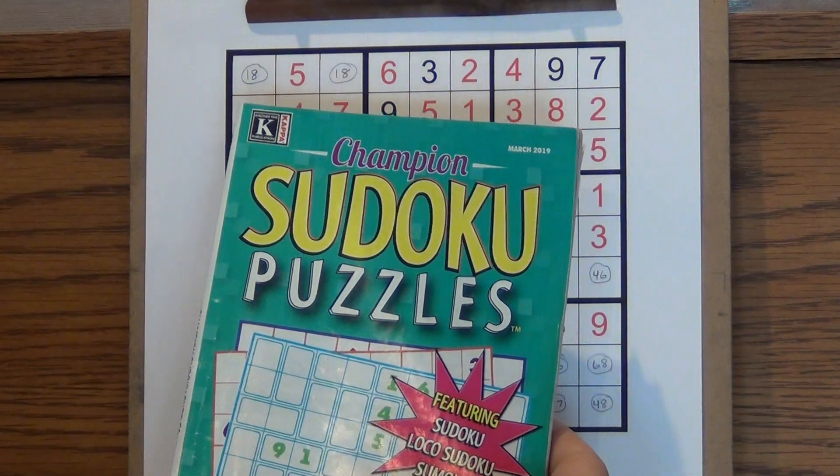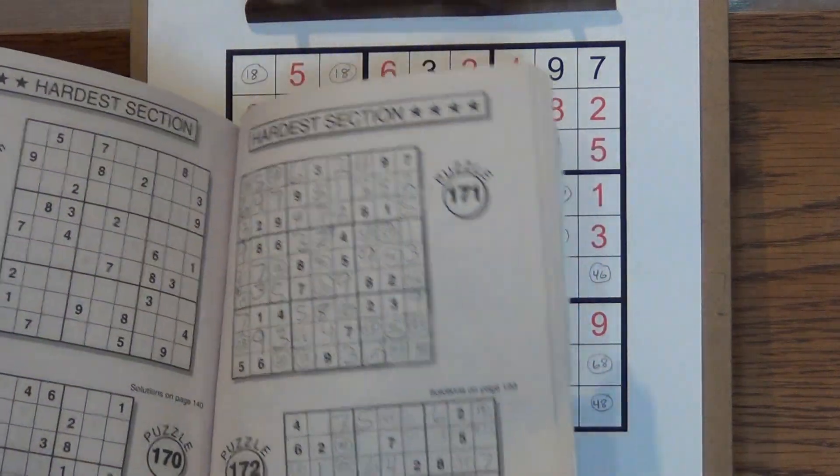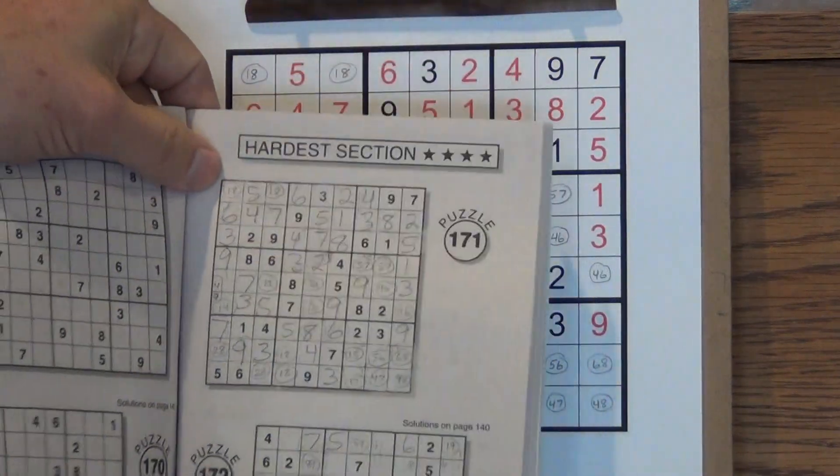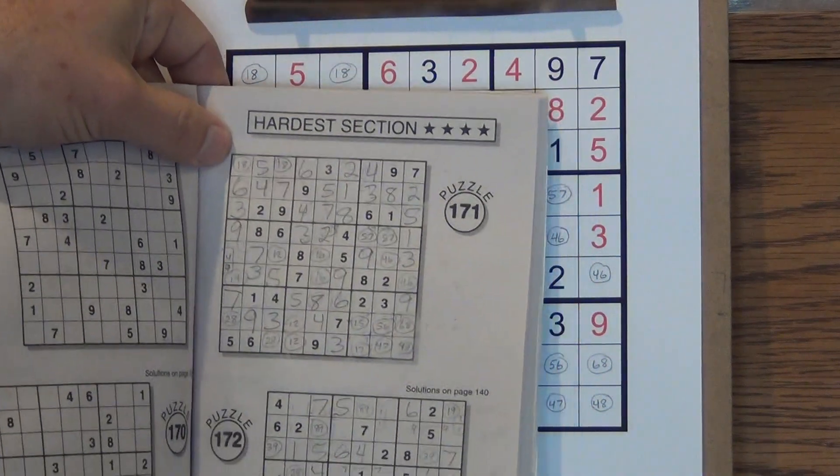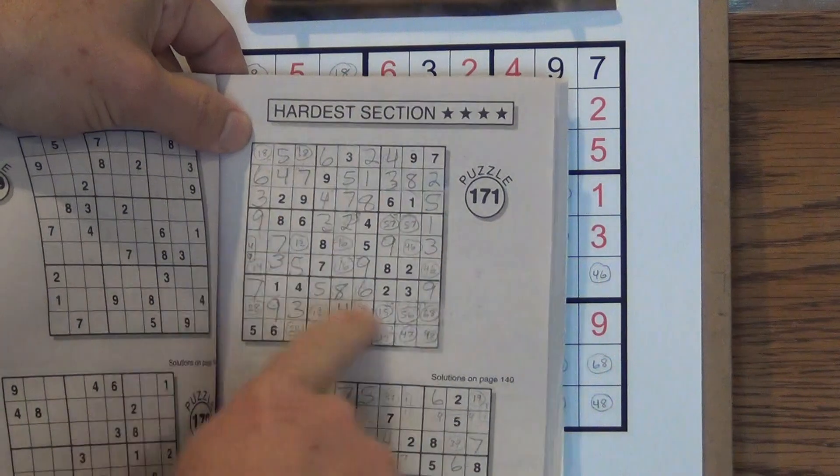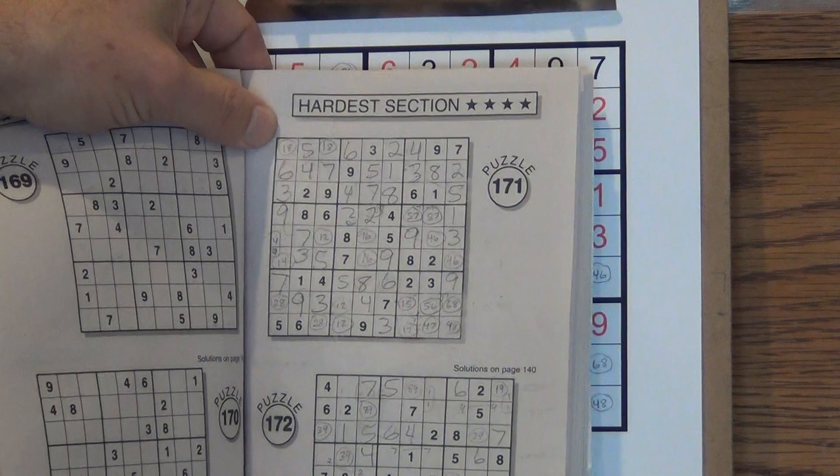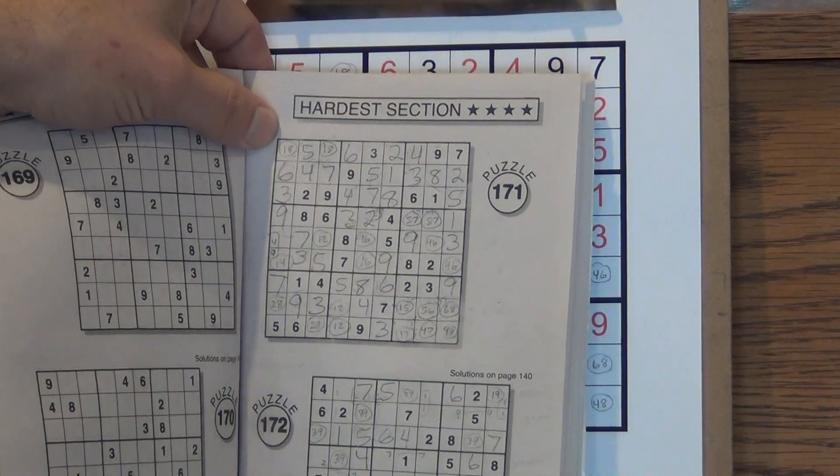Here's a puzzle from Champion Sudoku Puzzles from the hardest section, and here's what I do when I solve a hard puzzle that can't be solved with normal techniques. I've gone through and filled this puzzle in and gotten to the point that now there are no more obvious moves. I'm going to have to do a guess and check.